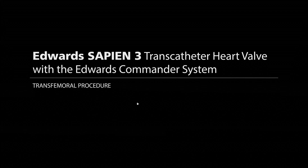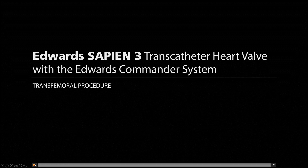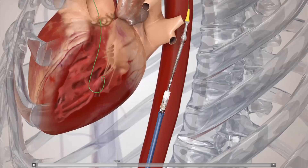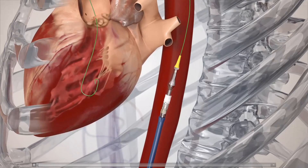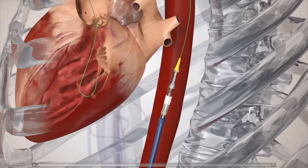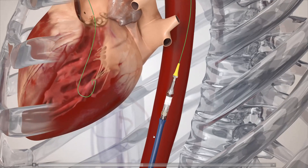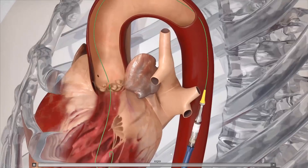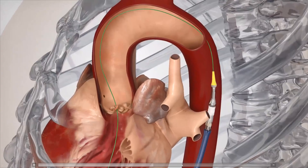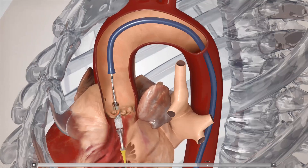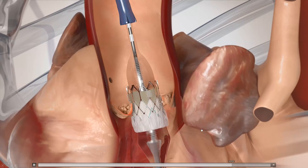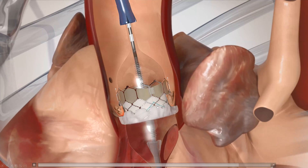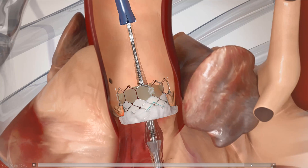For the Sapien 3 TAVR deployment procedure, with this particular device you need to mount the balloon inside the transcatheter valve, then advance the valve over the balloon with the pusher, and track it with the flex delivery catheter to avoid scraping the aortic arch. Once you cross the aortic annulus, expose the balloon markers, and once you have the position, inflate the balloon, deploy the valve, and remove the entire system.